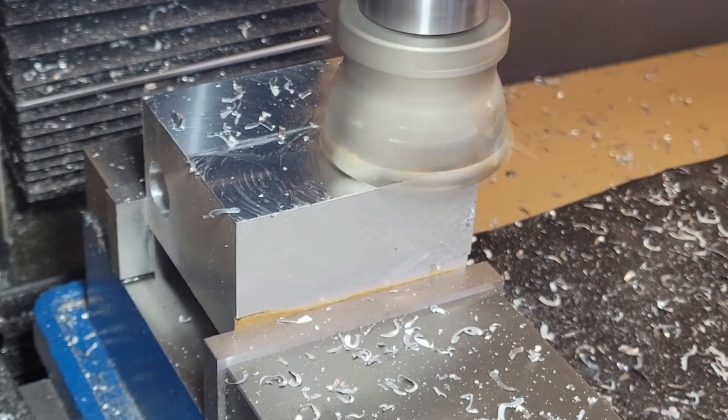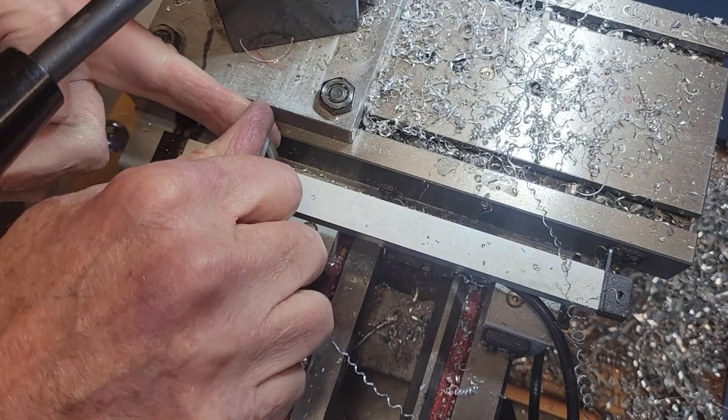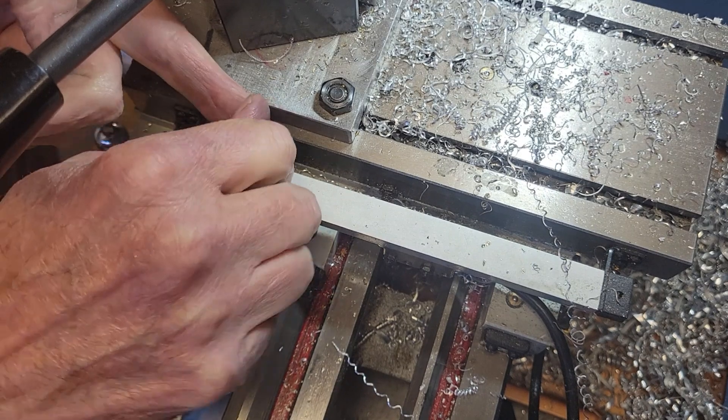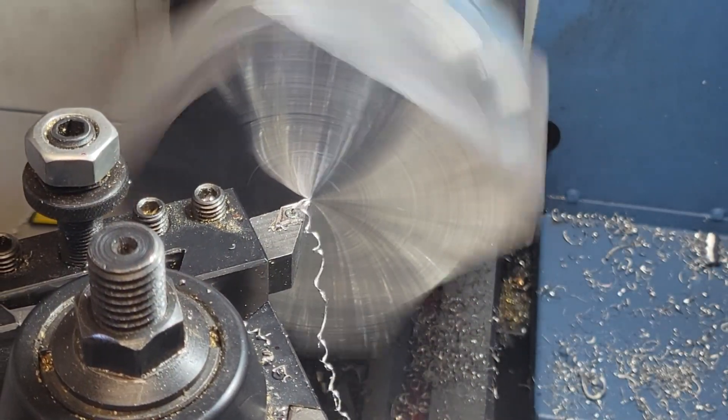I decided to face the top of the crankcase in the lathe, as my face mill is not large enough to perform this operation in one pass and leaves a groove down the middle. I don't want this on top of my crankcase, but I do use the face mill for the smaller sides.